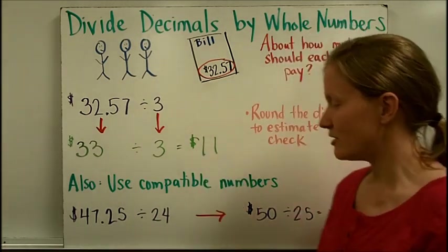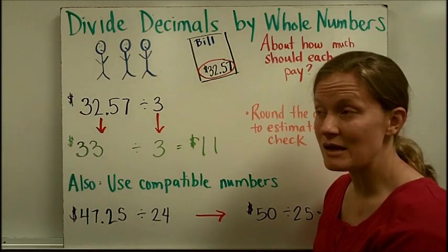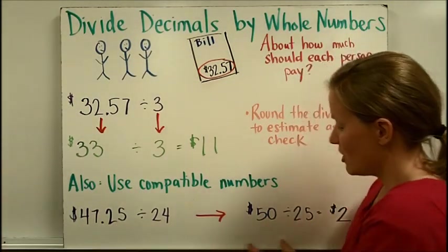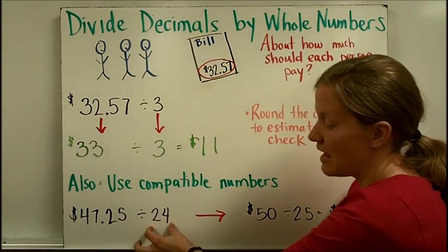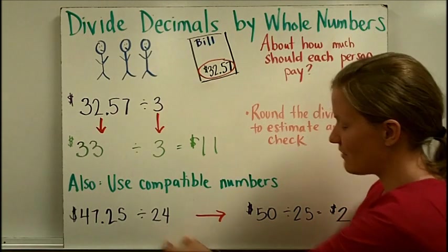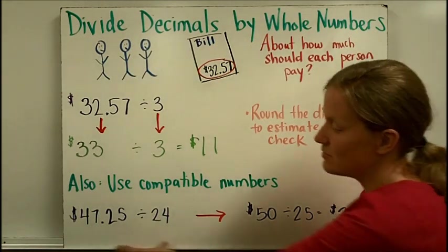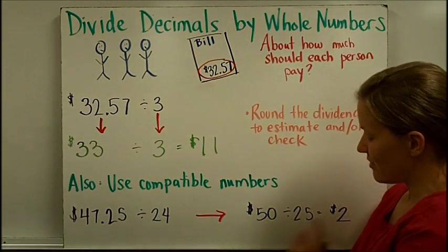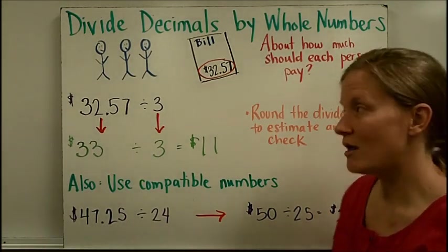And we would use some numbers that are compatible or easily done with mental math. So $47.25, you could think about that like $50. It's pretty close to $50. And it's much easier to divide by 25 than it is to divide by 24. So these are compatible numbers for these two. And then it's easy to do 50 divided by 25. Well, that would just be 2. So a good estimate is that each student would have to pay $2.